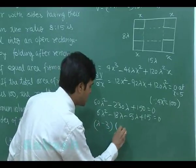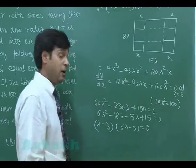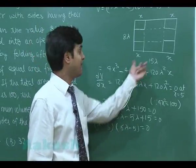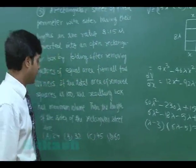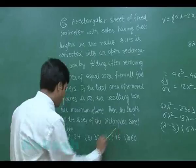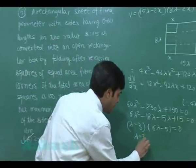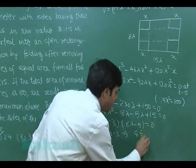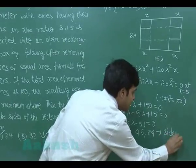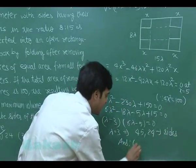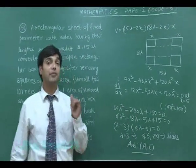The factors give (λ − 3)(6λ − 5) = 0, so λ = 3 or λ = 5/6. Putting λ = 3, we obtain the sides as 15×3 = 45 and 8×3 = 24. From the given options, the correct answers are A and C (sides 45 and 24). Let us move to question number 52.